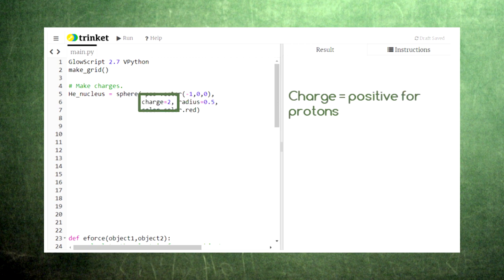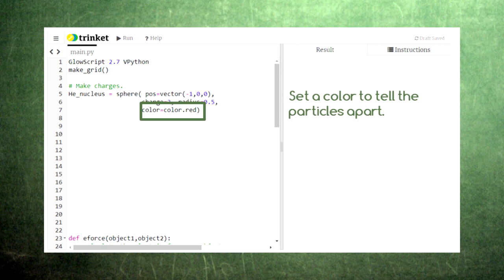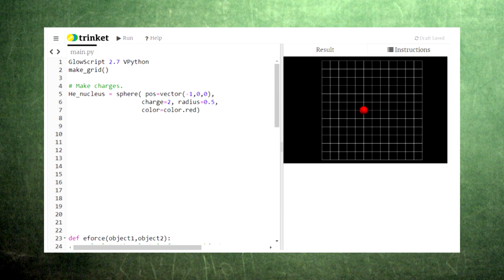Next, we need to give each sphere a charge, since charge is used in calculating the electric force. Next, we need to provide a radius. This radius will specify the size of each sphere in the window, although it won't affect any of the physics calculations. Finally, we need to give each sphere a color. Let's make the helium nucleus red. When we run the code, we'll see that our helium nucleus appears at the coordinates we specified.